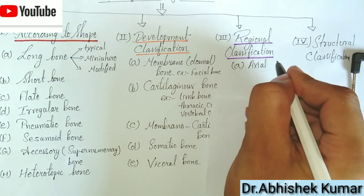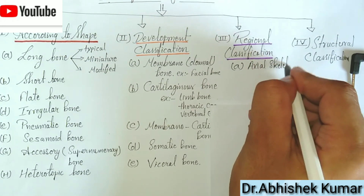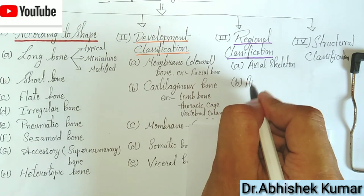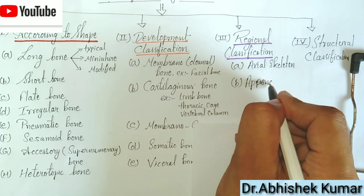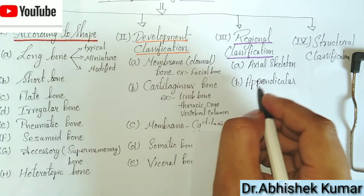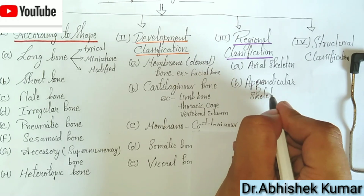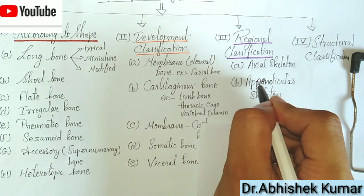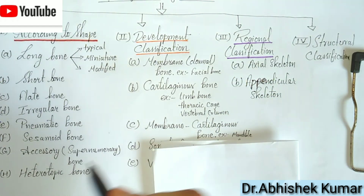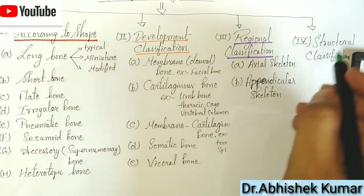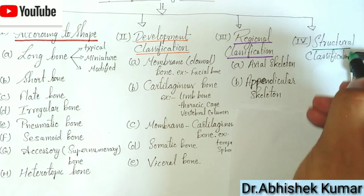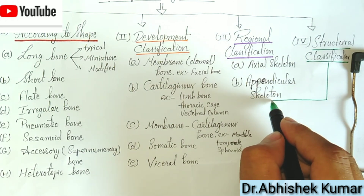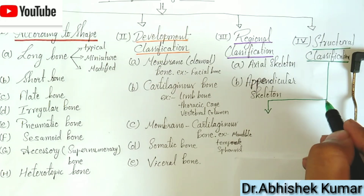In the regional classification, we have the axial skeleton and the appendicular skeleton. In our previous video we learned about the regional classification — you can check out that video via the eye button or in the description box.